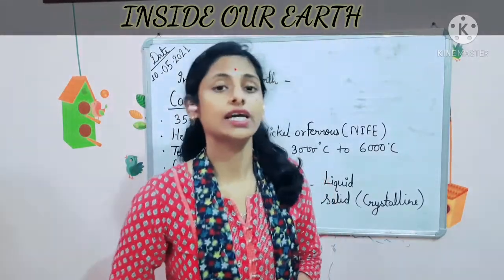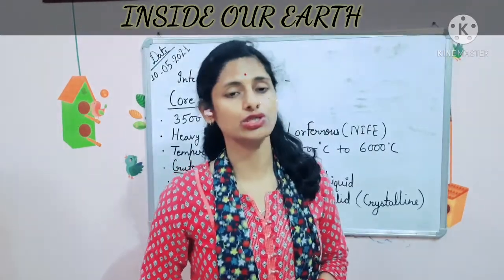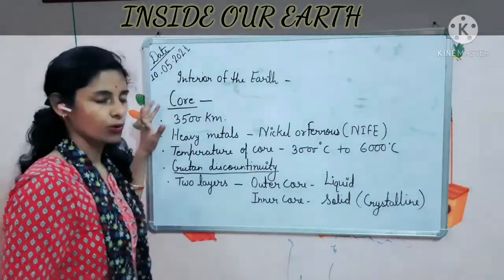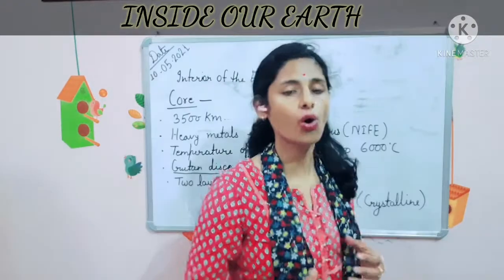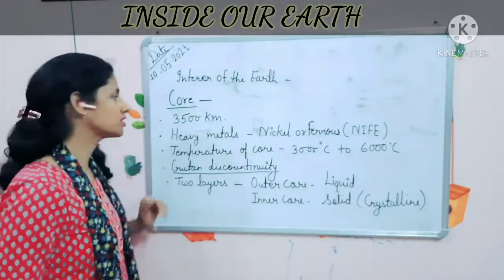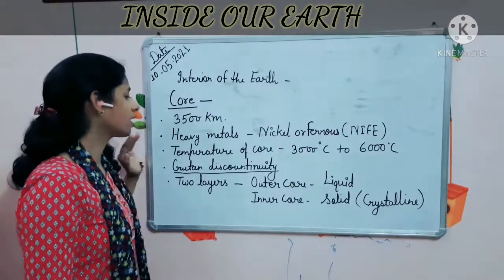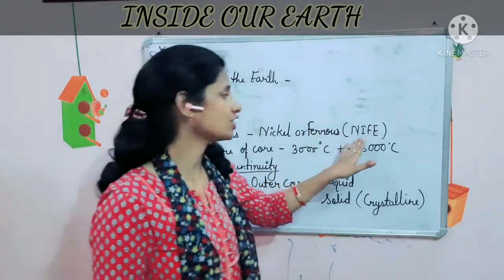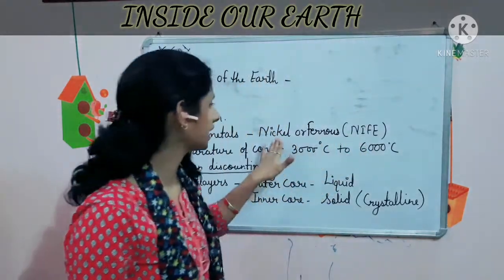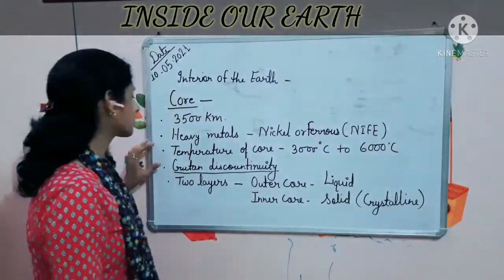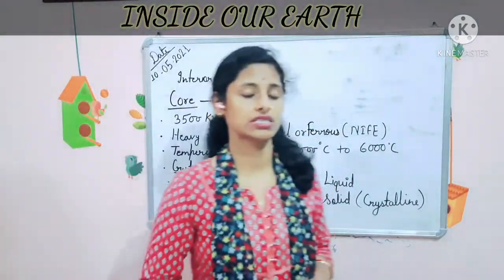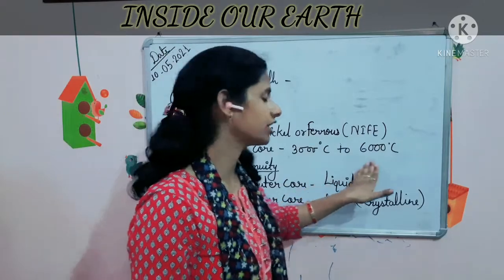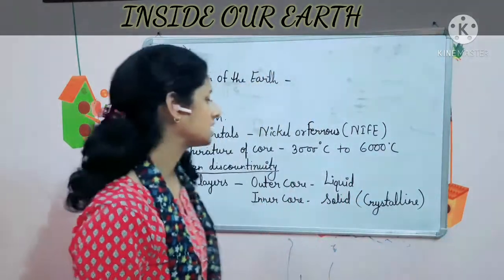Now let's talk about the third and innermost layer of the Earth — the core. The average density of the core is 3,500 km in radius. It is made up of heavy metals known as nickel and ferrous, abbreviated as NiFe — Ni for nickel, Fe for ferrous. The temperature of the core is very high, near about 3,000 to 6,000 degrees centigrade.